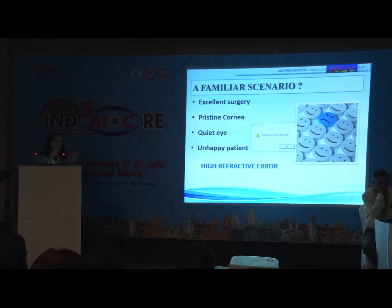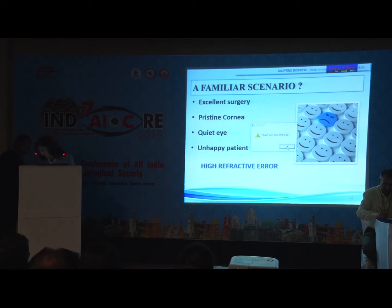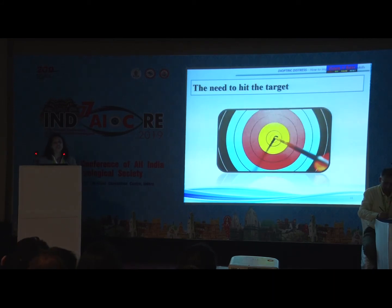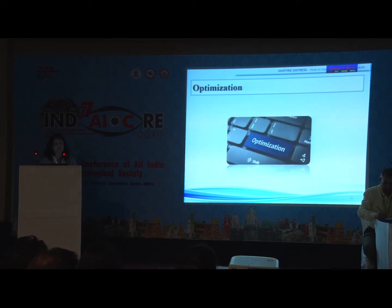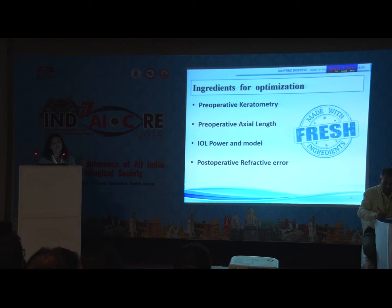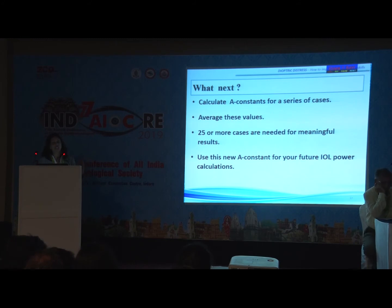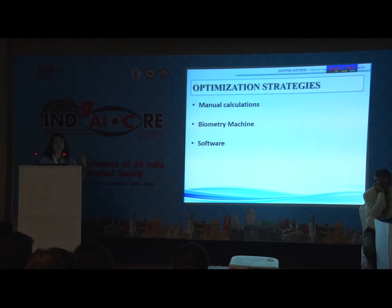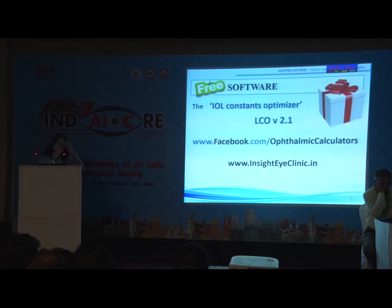You may still land in a scenario where you have done an excellent surgery — a clear cornea, a quiet eye — but the patient is very unhappy. The best solution is to do an optimization of your own results. You need all the parameters and data from your own cases, calculate a constant for a series of cases, and average these values — 25 or more cases would suffice. You can do these calculations using manual calculations, your biometry machine, or available software. There is one freely available software online for this purpose.